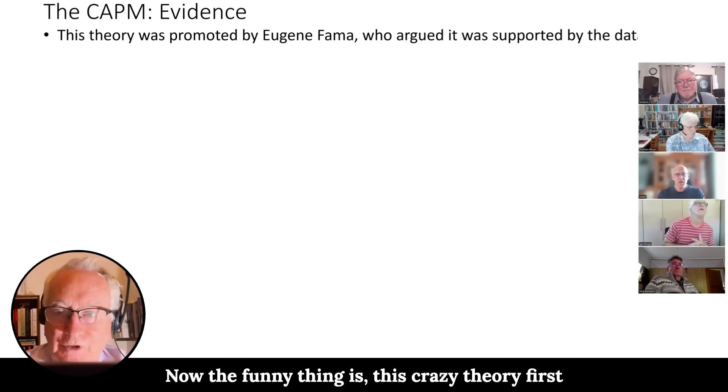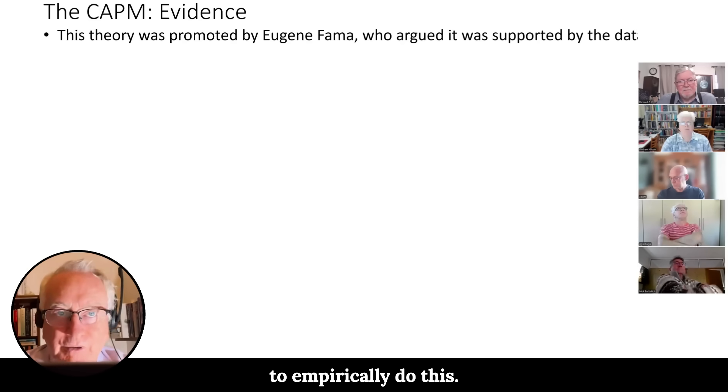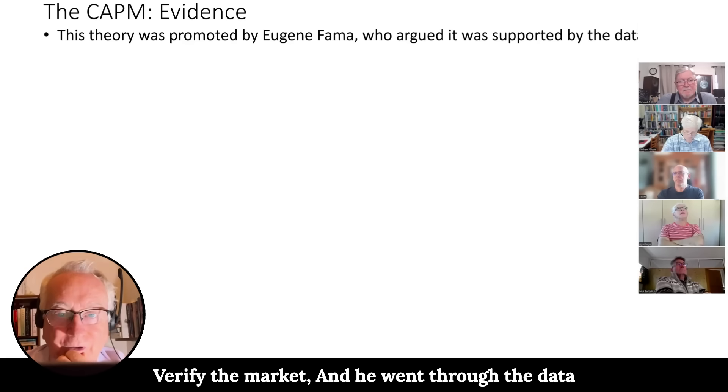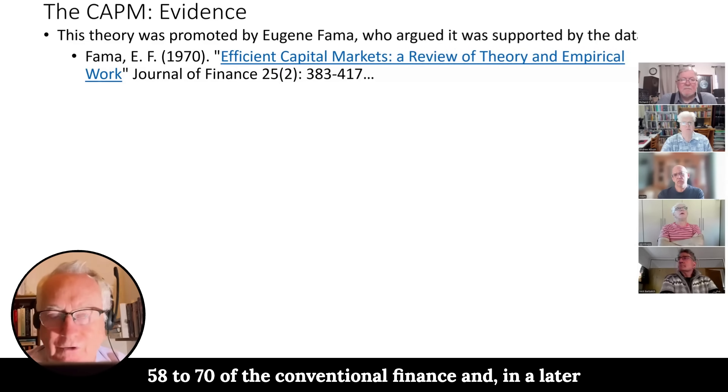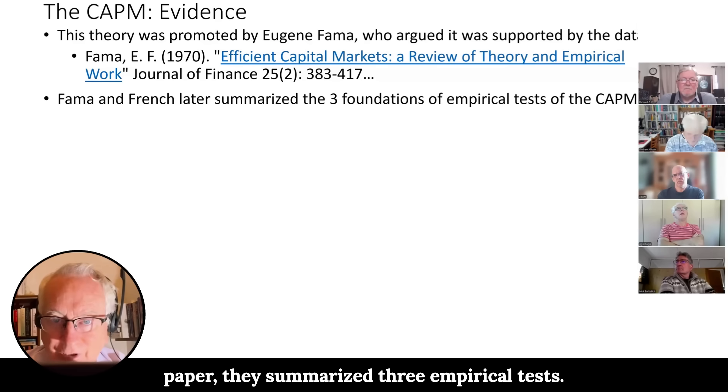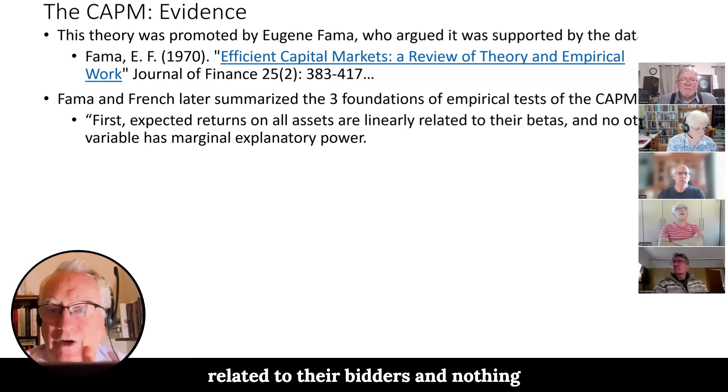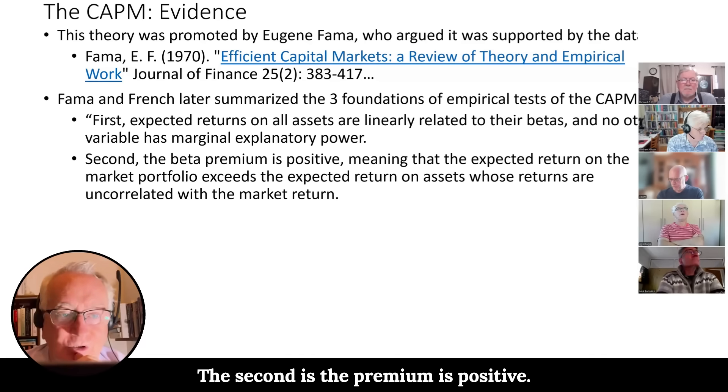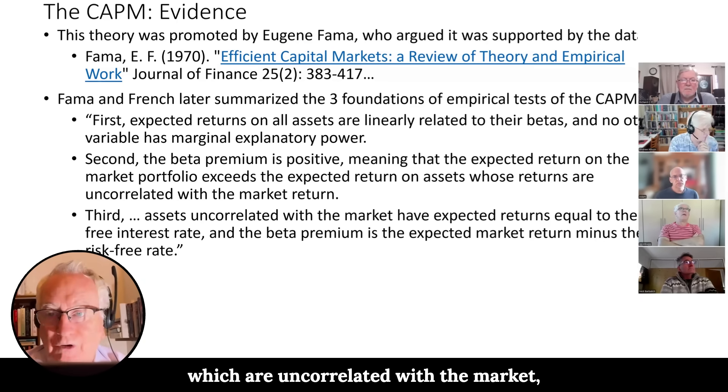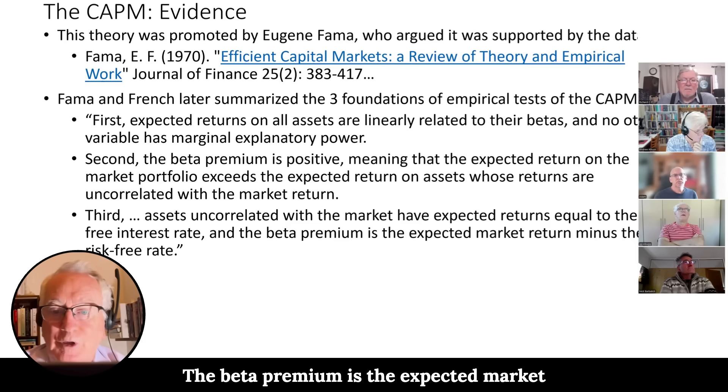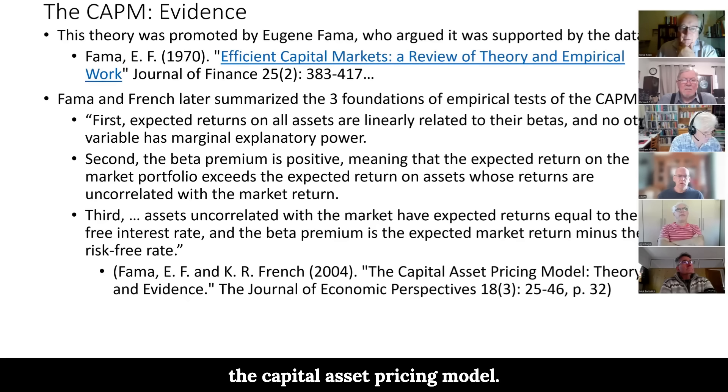Now the funny thing is, initially when this crazy theory first came out, Eugene Fama was the person who decided, here's I'm going to make my career. I'm going to empirically verify the capital asset pricing market. And he went through the data and found a fairly good fit. This is in 1970 now. So this is the evolution from 58 to 70 of the conventional view of finance. And in a later paper they summarized three empirical tests. One is that expected returns are linearly related to their betas and nothing else has any real explanatory power. The second is the premium is positive. So the more risk you take on, the more return you get. And the third, that if you have assets which are uncorrelated with the market, they're going to return the pure rate of interest. The beta premium is the expected market return minus the risk-free rate, all the stuff I've shown you in those formulas beforehand. So that's the foundations of the capital asset pricing model.